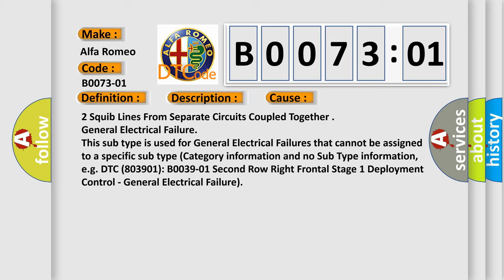This subtype is used for general electrical failures that cannot be assigned to a specific subtype. No subtype category information and no subtype information, e.g. DTC B003901, 2nd row right frontal stage 1 deployment control, general electrical failure.